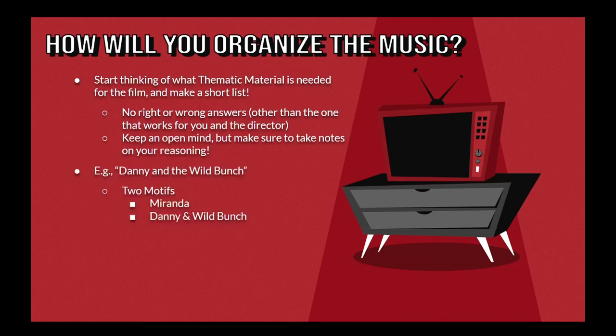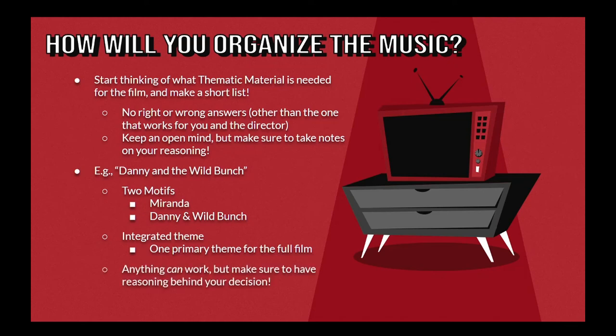For example, when considering what themes might be important for Danny and the Wild Bunch, you could consider writing motifs for both Miranda and her characters. Another perfectly valid approach would be to write a single primary theme for the entire short film and just simply develop it as the film progresses. Really, any approach you decide to take could work, so long as you're able to provide simple reasoning behind your decision.